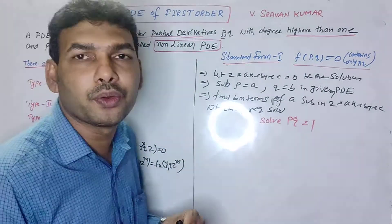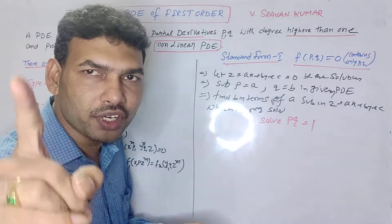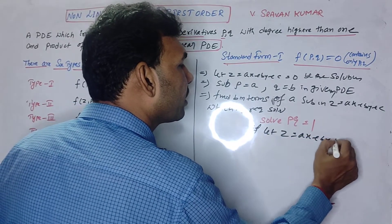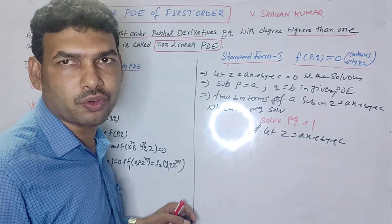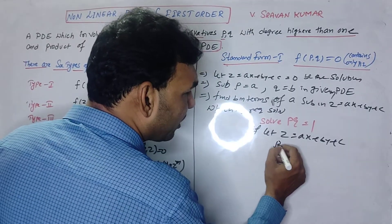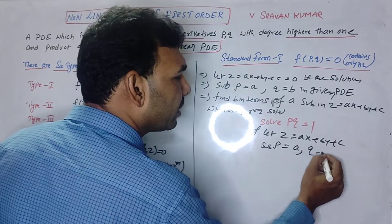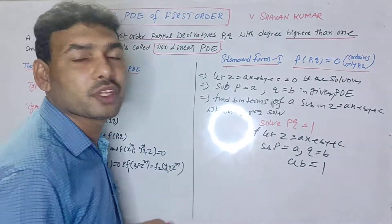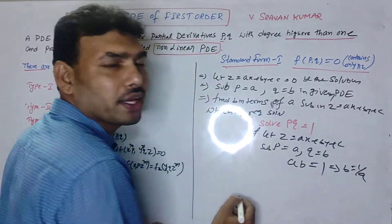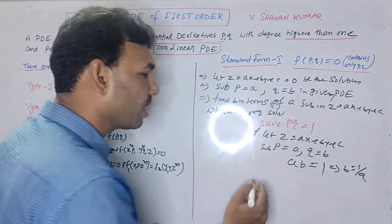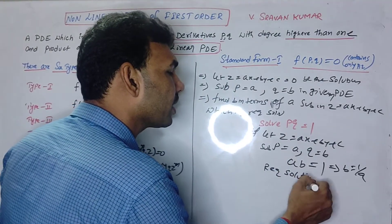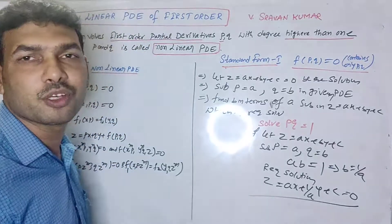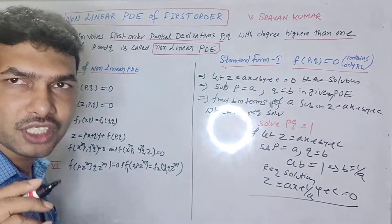For example, solve P into Q equal to 1. Since it contains only P and Q, this is standard Form 1. Let z equal to ax plus by plus c be the solution. Substitute P with a and Q with b: a times b equal to 1, so b equal to 1 by a. The required solution is z equal to ax plus (1/a)y plus c.